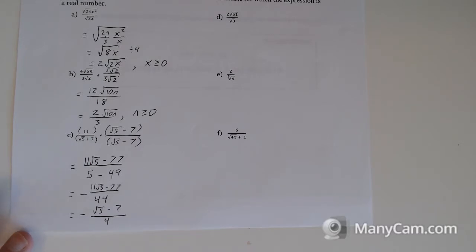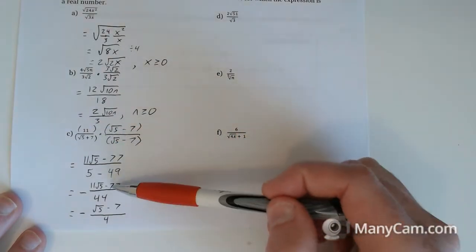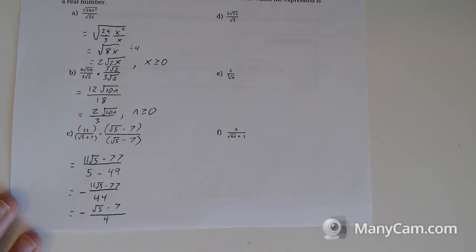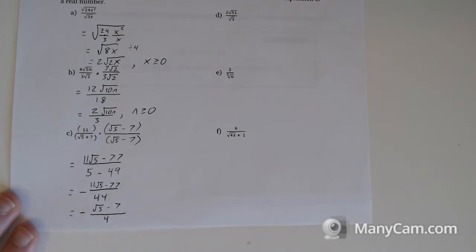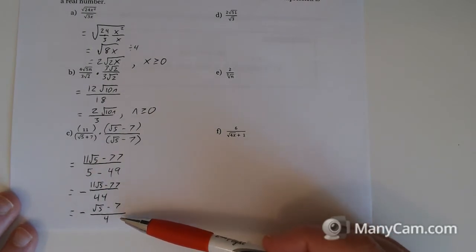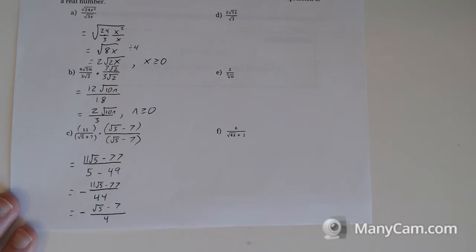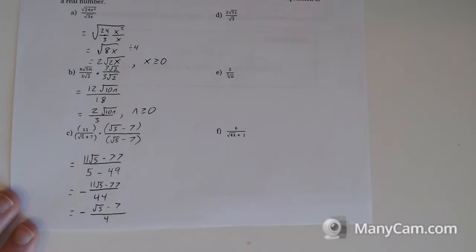It seems like we could have left the 11 in front, but we didn't know we'd have a factor of 11 on the bottom. We want the denominator to look as simple as possible — if we ever need to find a common denominator, working with 4 is much easier than working with root 5 plus 7. So simplifying the denominator makes any future operations much more manageable.